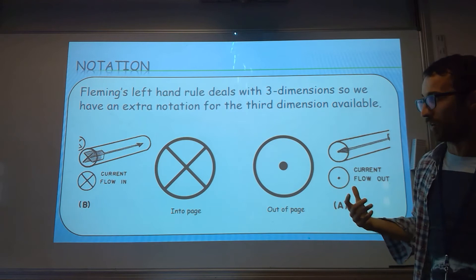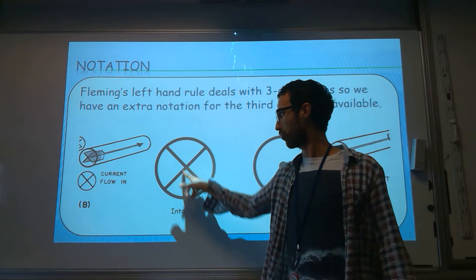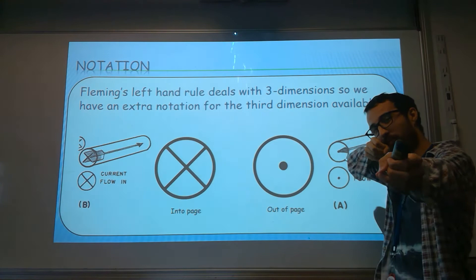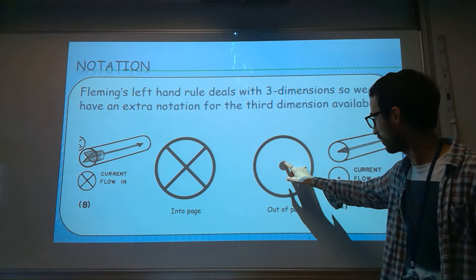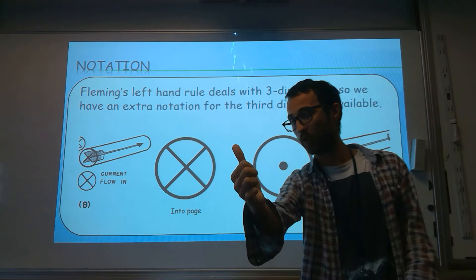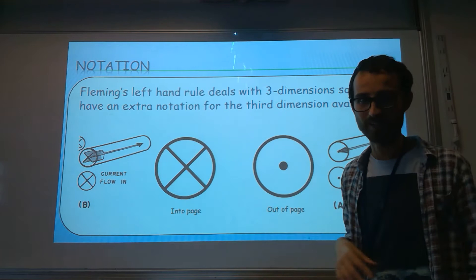Now when we come on to Fleming's left-hand rule and other things in the future, it's quite important to know if the field is coming out towards you or going into the page because we can't really draw that easily, so we have a notation for that. If it's going into the page we use a cross, and if it's coming out of the page we use a dot. A good way to remember that is: imagine taking an arrow and firing it at you. If it's coming towards you, all you're going to see is the front of it, the pin, which looks like a dot. If you fire an arrow away from you, you can see the back of the arrow, which is the cross, so this tells you it's going into the page.